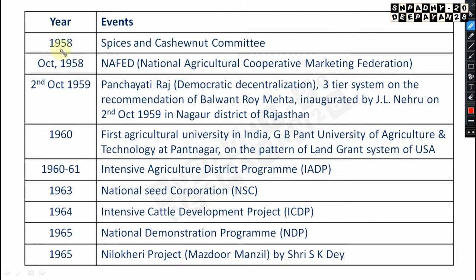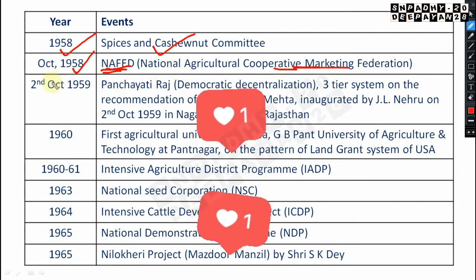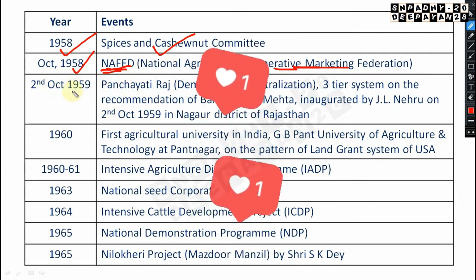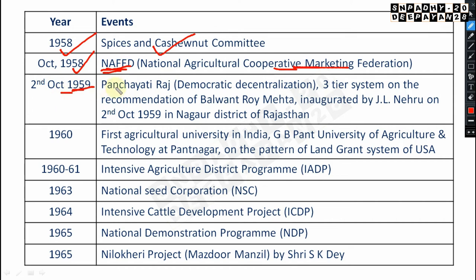In October 1958, the Spices and Cashew Nut Committee was established. Also in October 1958, NAFED — National Agricultural Cooperative Marketing Federation — was established. This abbreviation is very important to remember.